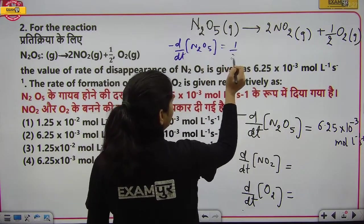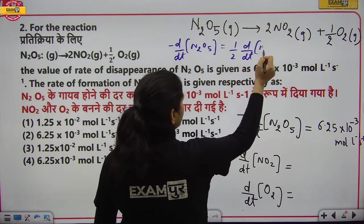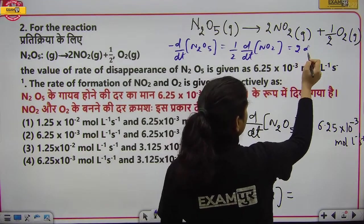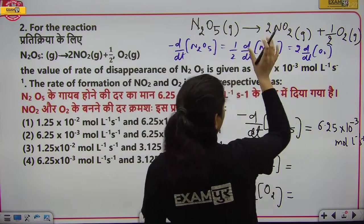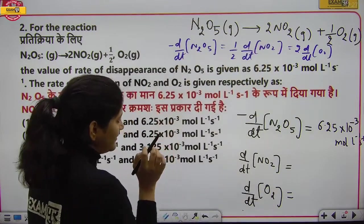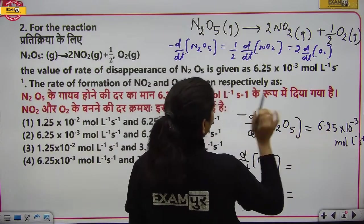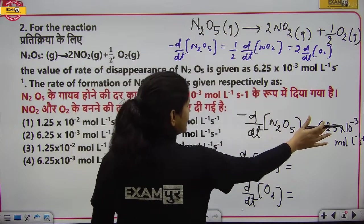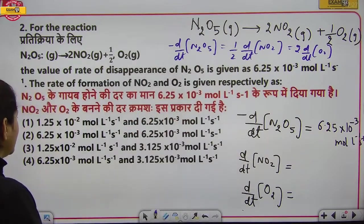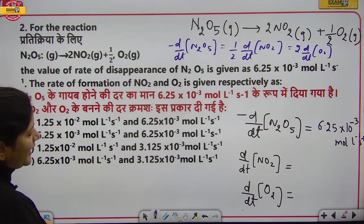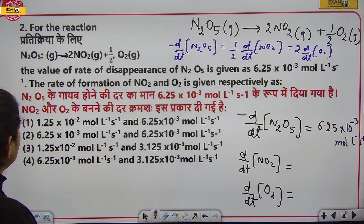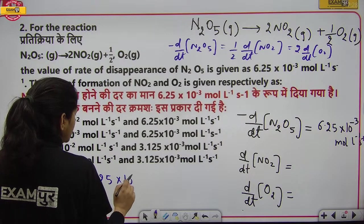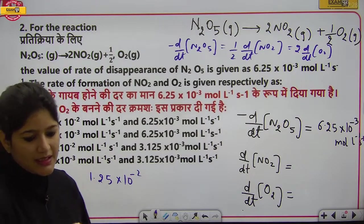Differential rate equation: −d[N₂O₅]/dt = (1/2) d[NO₂]/dt। इसकी value 6.25 × 10⁻³ है, तो d[NO₂]/dt = 2 × 6.25 × 10⁻³ = 12.50 × 10⁻³ = 1.25 × 10⁻² mol/L/s।